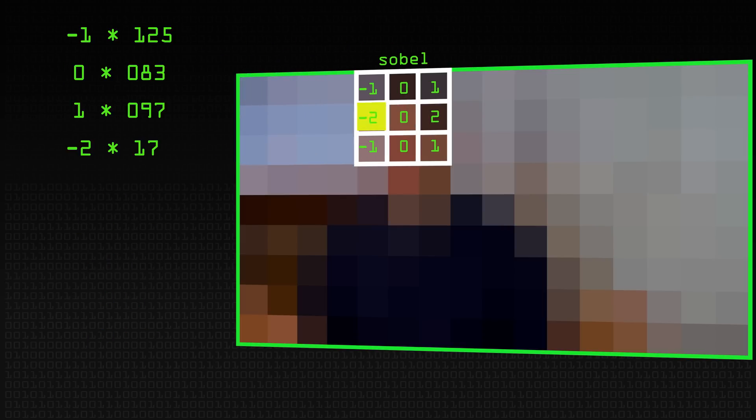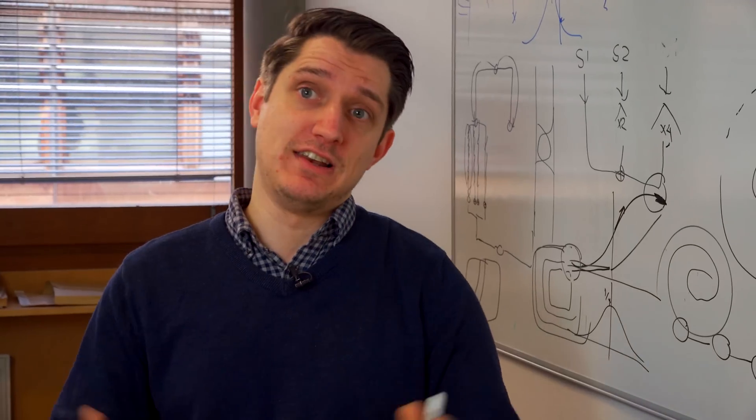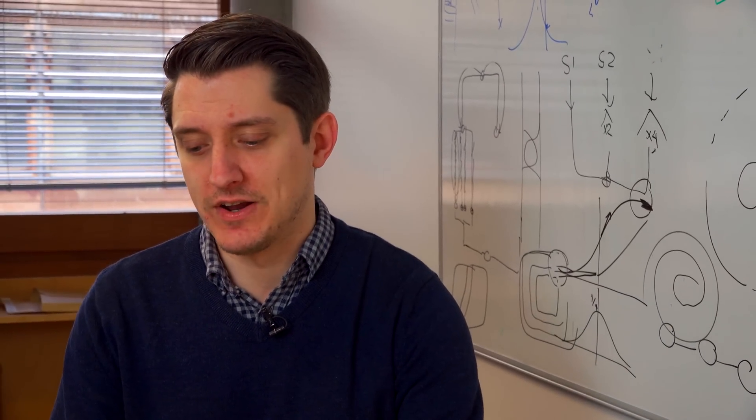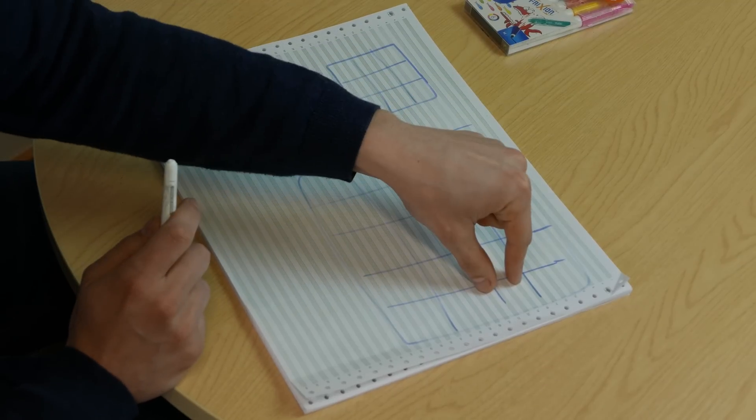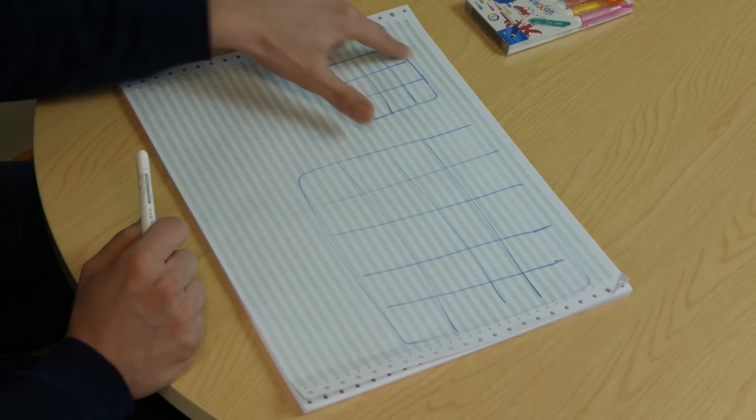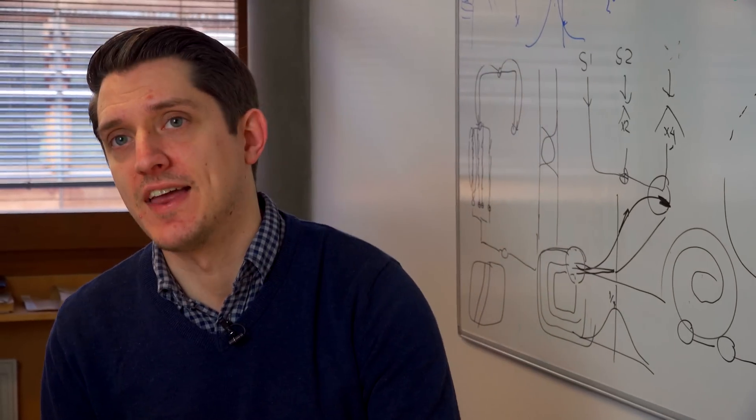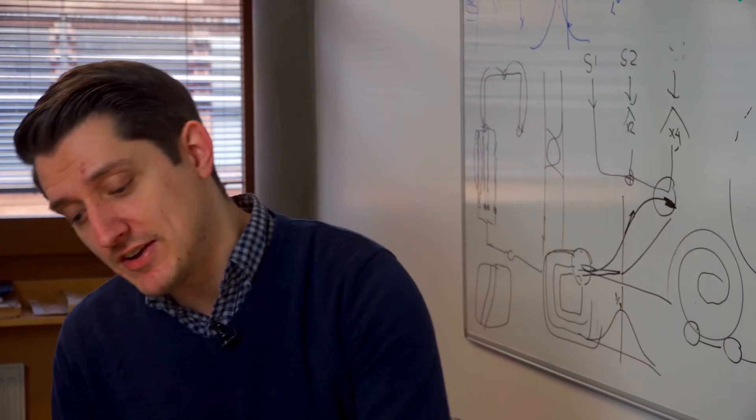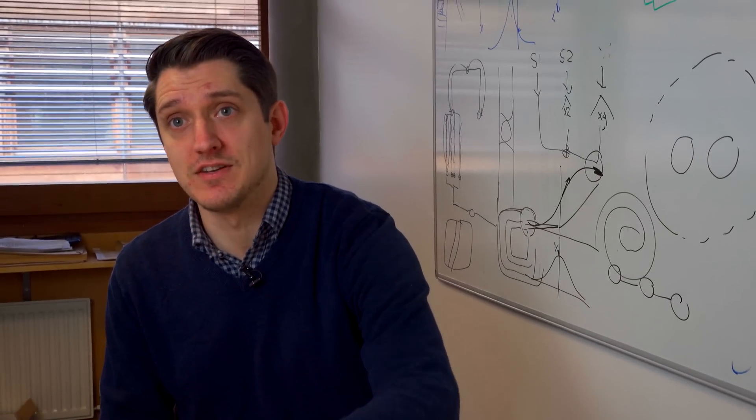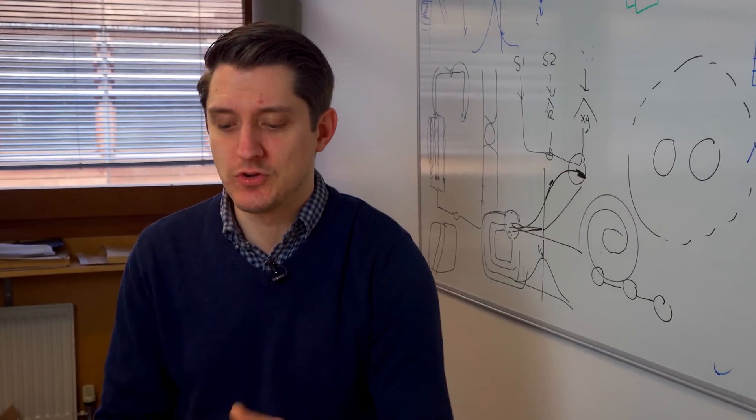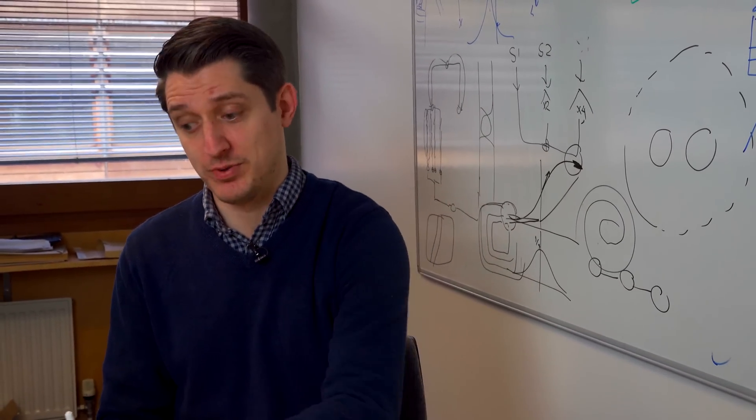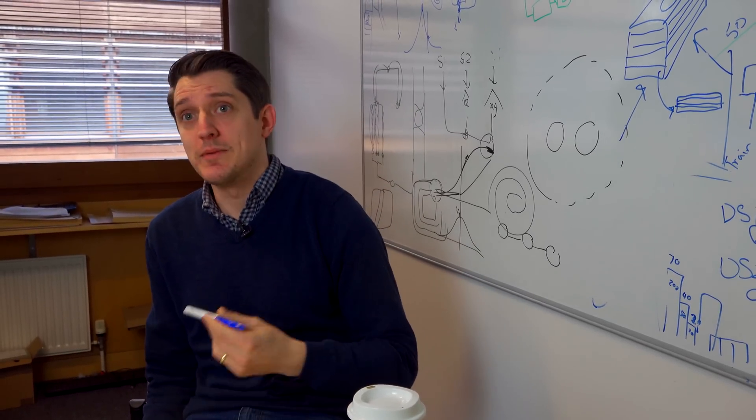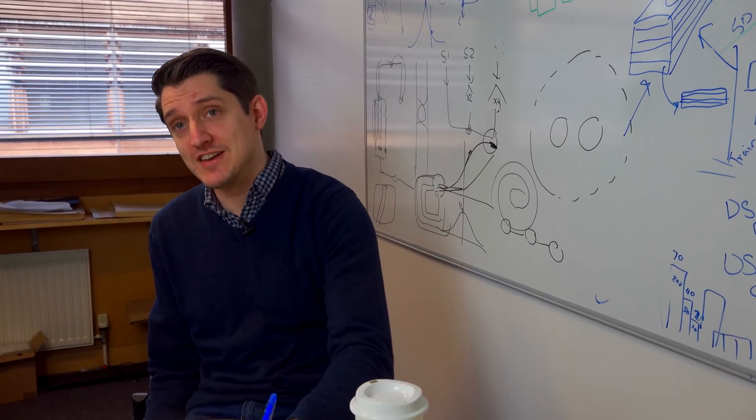The problem is suppose we want to do a really large window. This is going to get slow really quickly because to every position in this image we're doing nine products and then adding them all up. If this window is 10 by 10 or 20 by 20 or 100 by 100, the amount of operations per pixel is going to get really quite large.